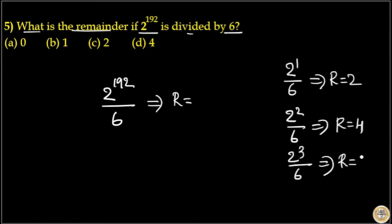Again, 2 raised to 3 by 6 implies this is 8 by 6, then the remainder is 6 plus 2, so 2 is the remainder. Then again, 2 raised to 4 by 6 implies the remainder is 2 raised to 4 which is 16, 16 by 6, the remainder is 6 into 2, 12 plus 4, so 4 is the remainder.